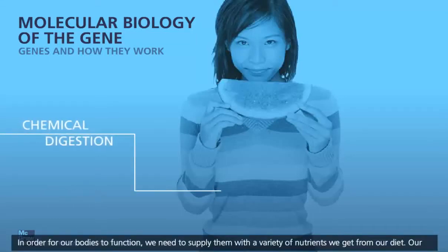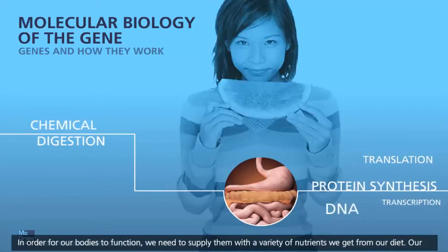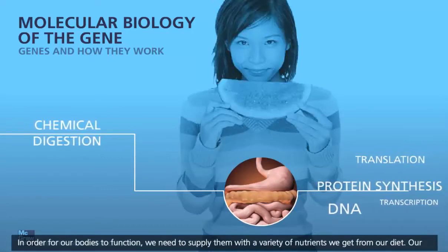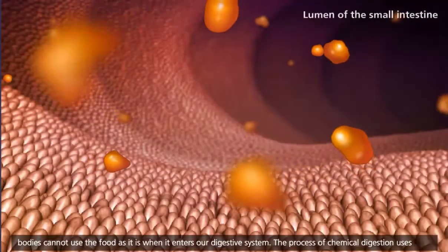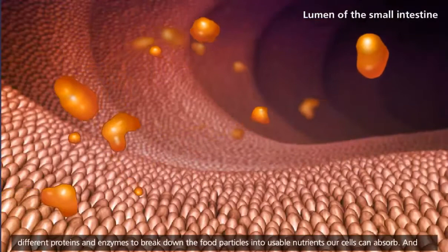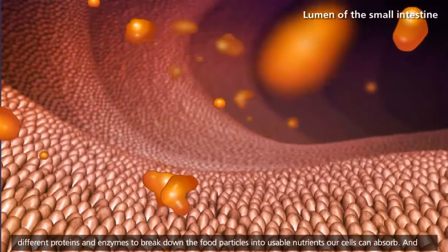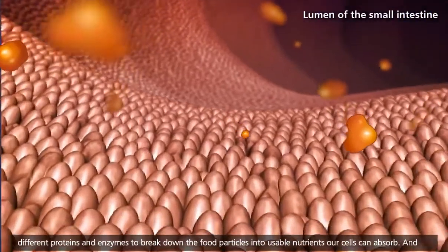In order for our bodies to function, we need to supply them with a variety of nutrients we get from our diet. Our bodies cannot use the food as it is when it enters our digestive system. The process of chemical digestion uses different proteins and enzymes to break down the food particles into usable nutrients our cells can absorb.